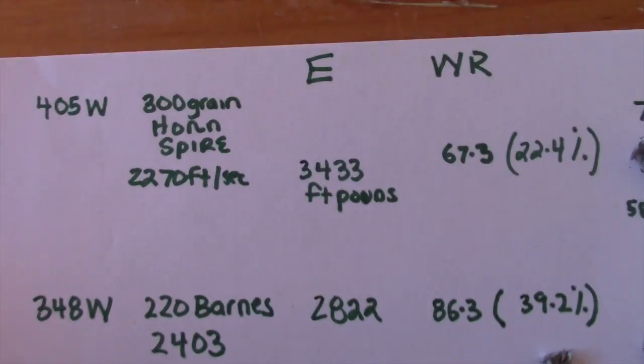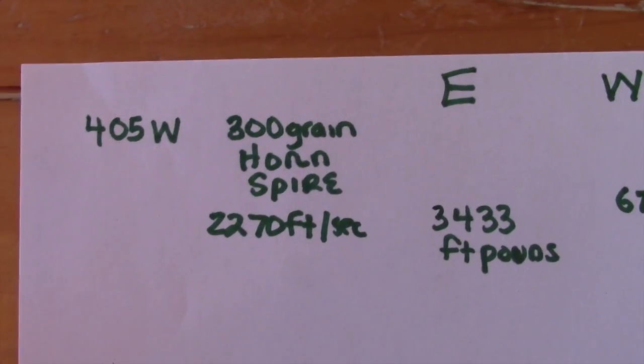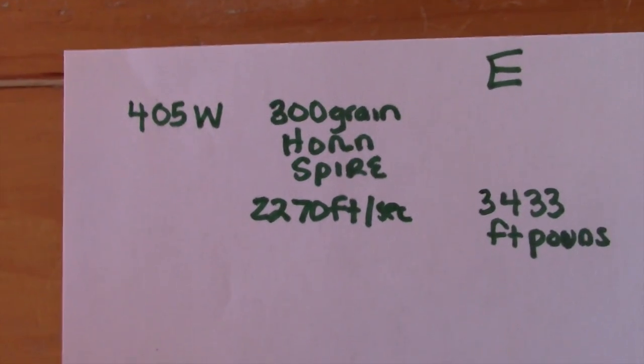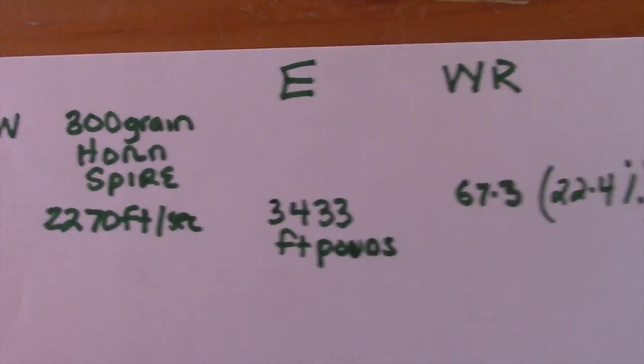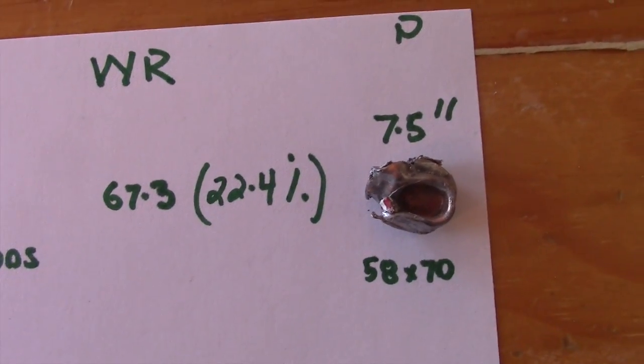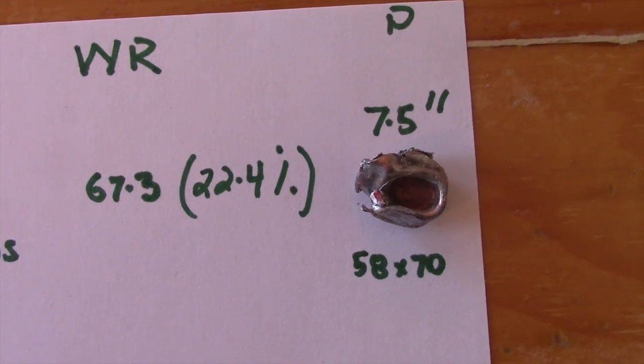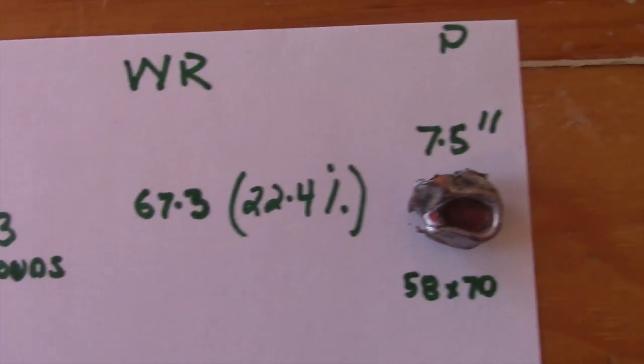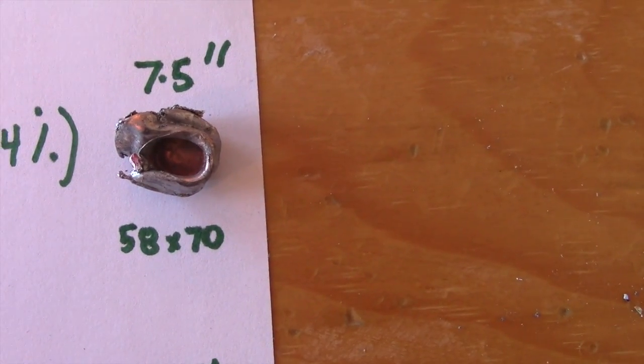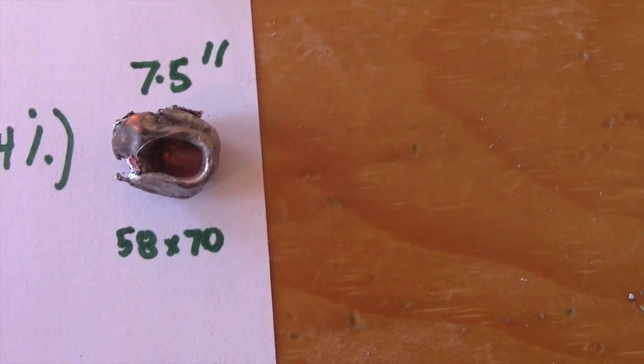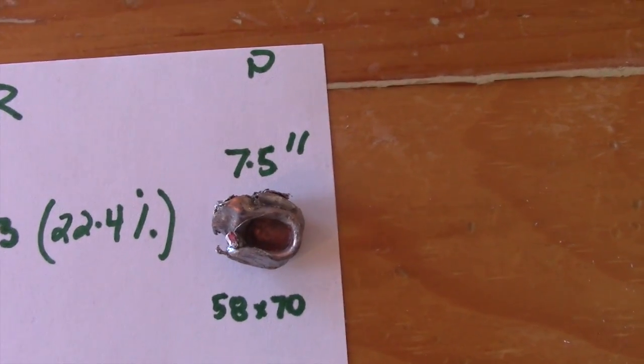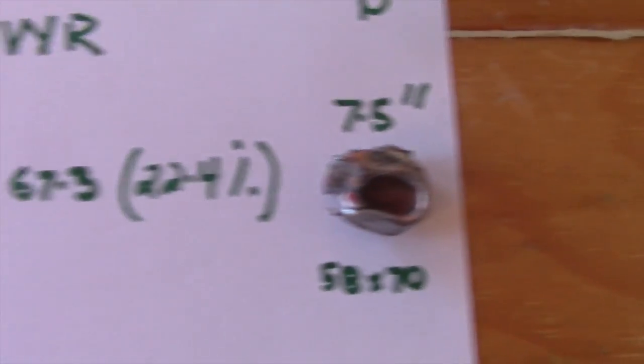Okay, here's my tools for doing all the figuring. And what did we find out? The least penetration was with the .405 Winchester 300-grain Hornady Spire Point. It was traveling at 2270 with 3433 foot-pounds. It lost a lot of weight. So that only weighs 67.3 grains. That shed core. 22.4%. Went seven and a half inches into the hard paper. Expanded to 58 by 70. Probably would have been a little bigger with the core intact. And it lost its core in probably the last quarter of penetration.